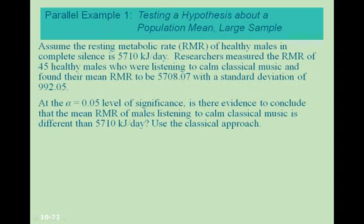Let's look at an example testing a hypothesis about a population mean with a large sample. Assume the resting metabolic rate (RMR) of healthy males in complete silence is 5,710 kJ per day. Researchers measured the RMR of 45 healthy males listening to calm classical music and found a mean RMR of 5,708.07 with a standard deviation of 992.05. At alpha equal 0.05, is there evidence that the mean RMR is different from 5,710? We will use the classical approach.